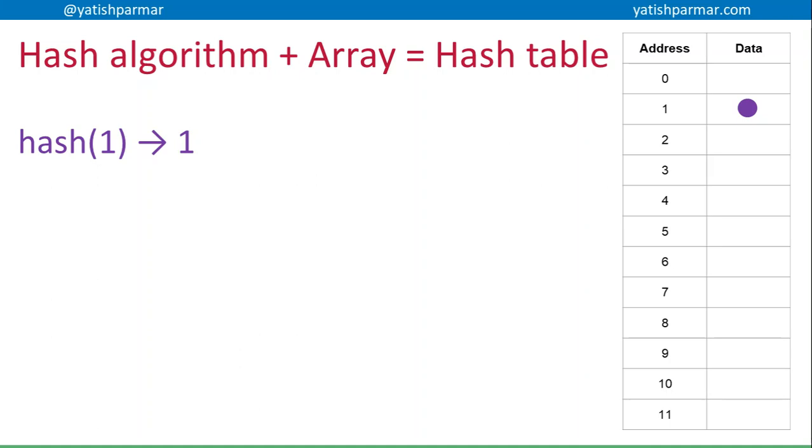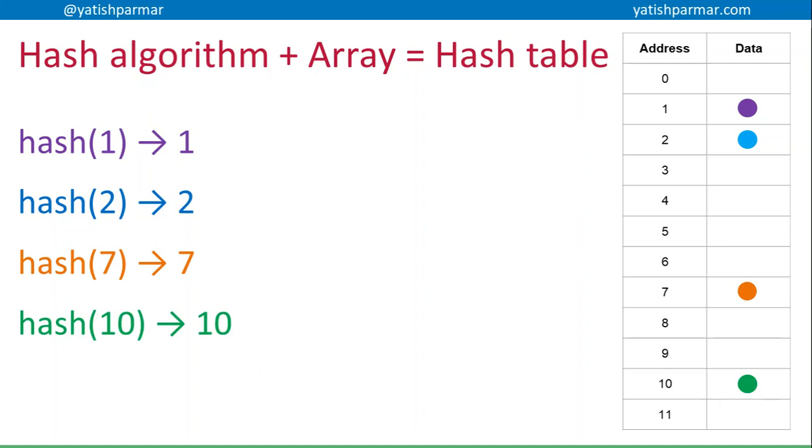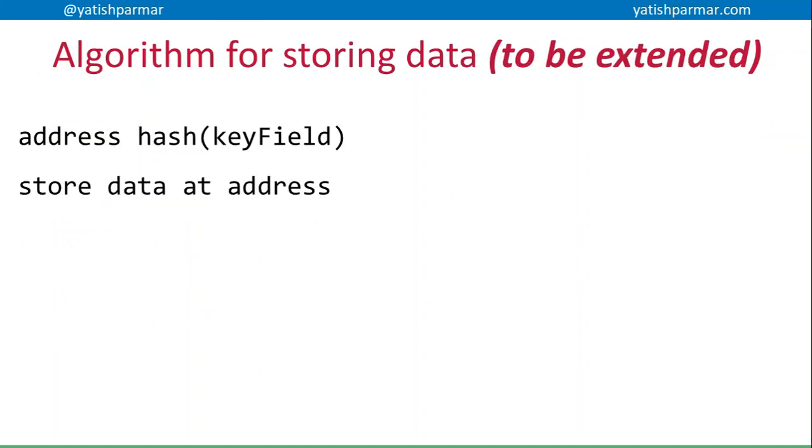Same thing if I have a value of 2 in my key field and I hash that, my function returns an address of 2, so at index 2 in my array I store that data, and so on. The most simplistic version of this algorithm for storing data, which will be significantly extended in the next video...